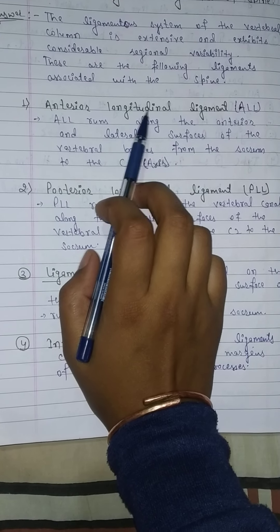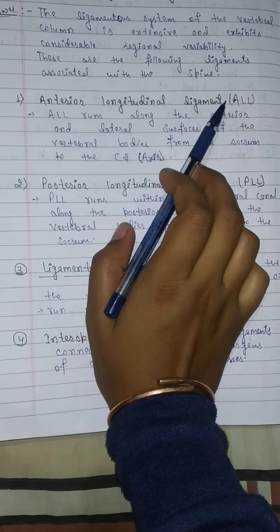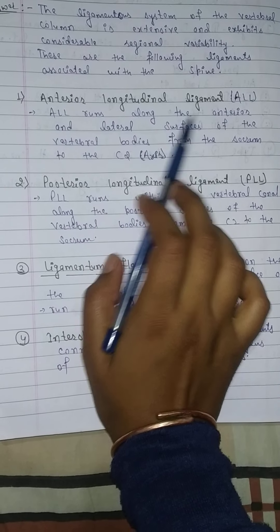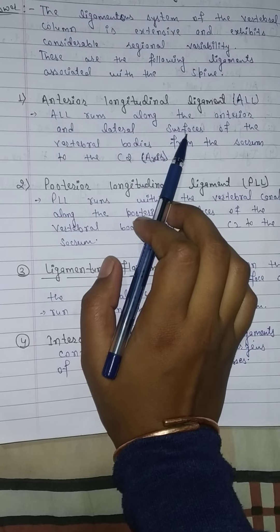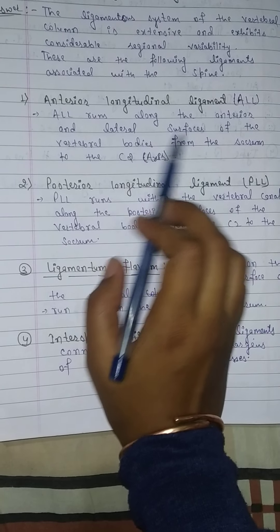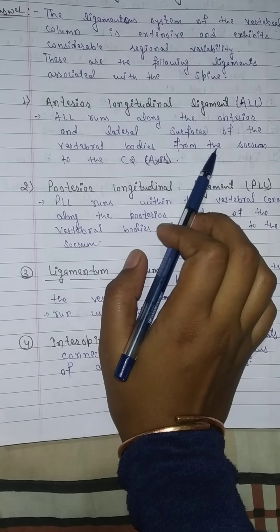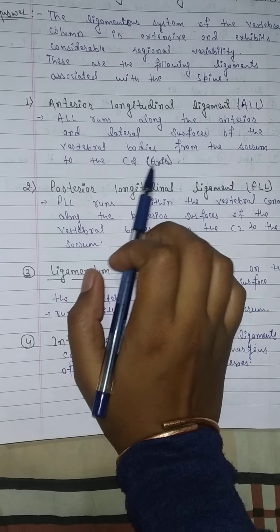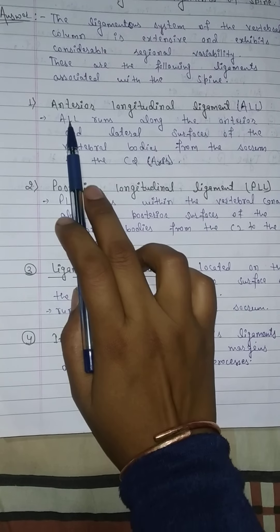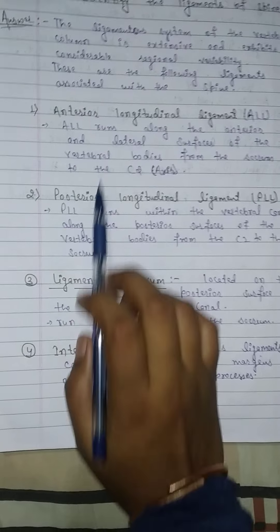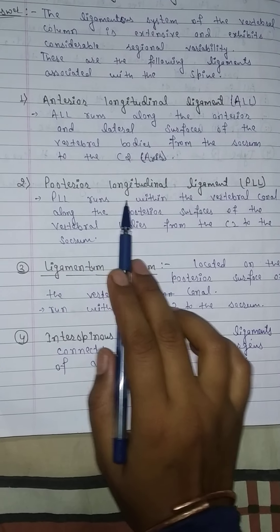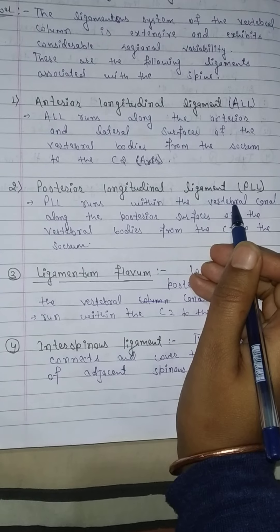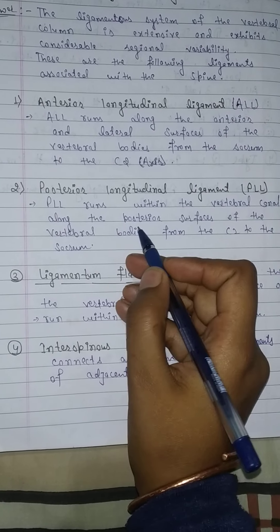The first ligament is the Anterior Longitudinal Ligament, also known as ALL. The ALL runs along the anterior and lateral surfaces of the vertebral bodies from the sacrum to C2, which is also known as the axis vertebra.